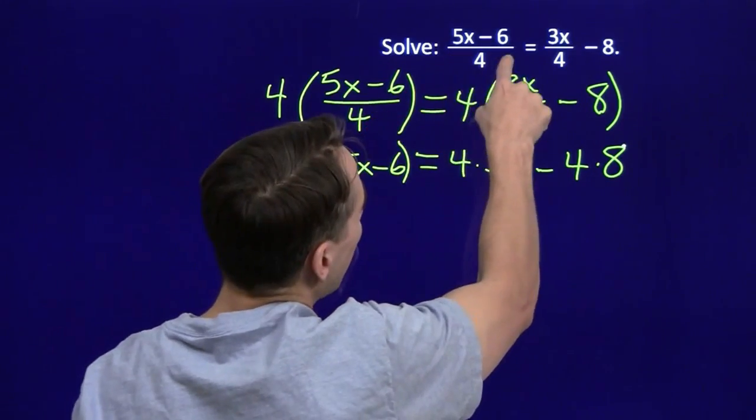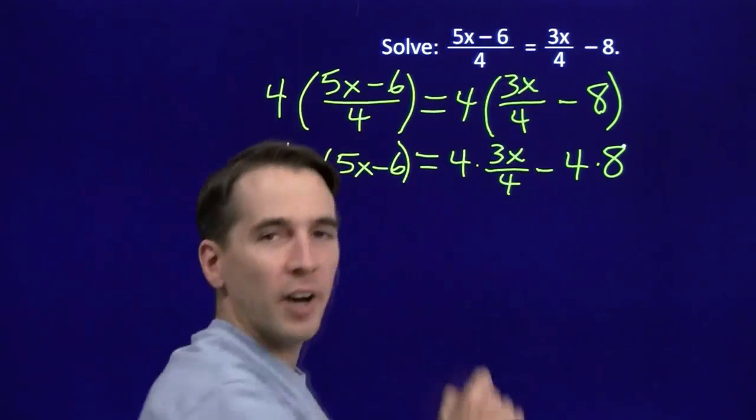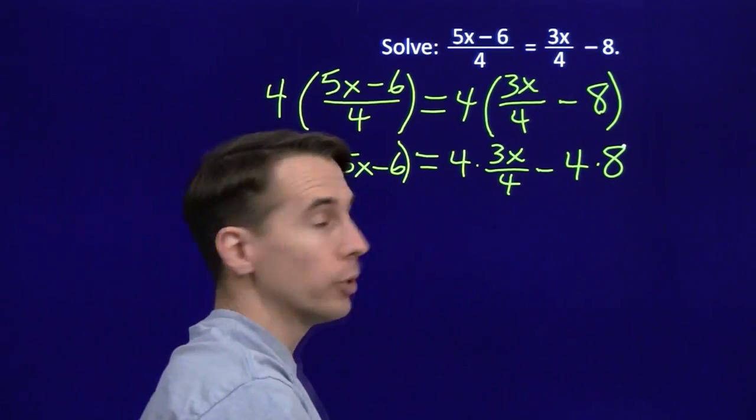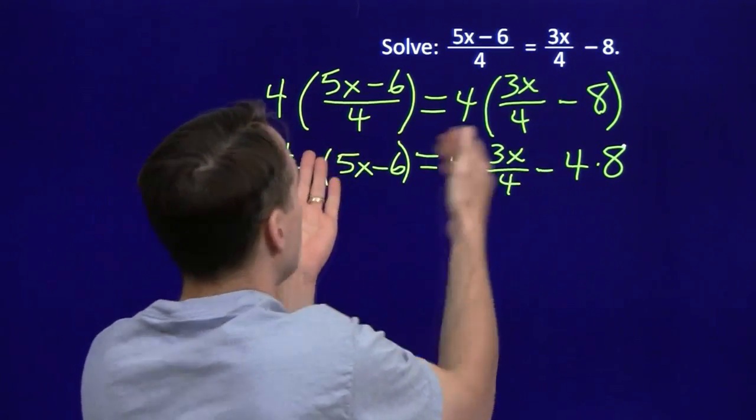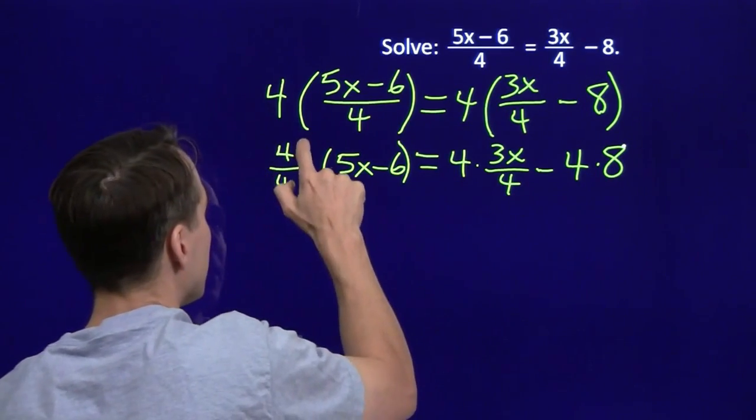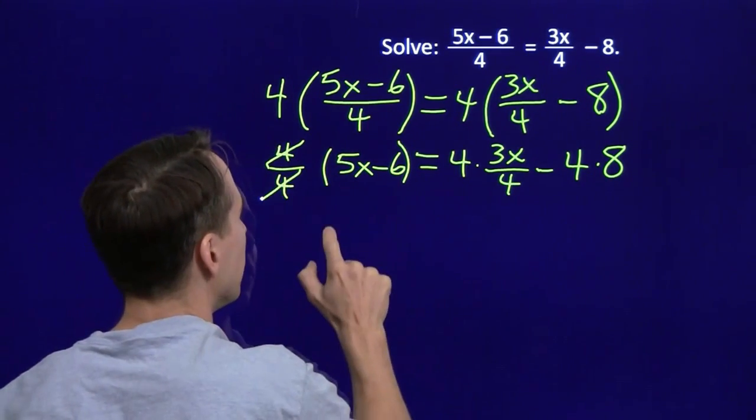Up here, the 5x minus 6, the whole thing is divided by 4. Over here, the minus 8 isn't divided by 4. It's not part of the numerator. So when we multiply both sides by 4, here I can rewrite it as 4 over 4 times 5x minus 6. That means we can cancel these out. That just equals 1.